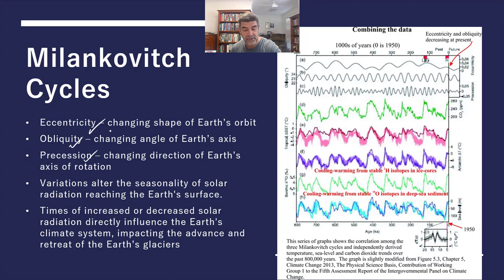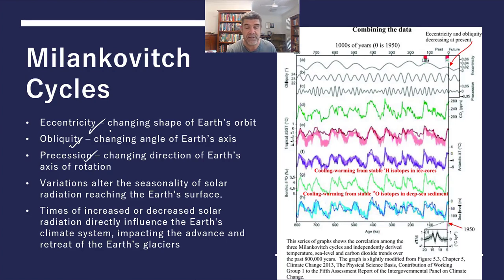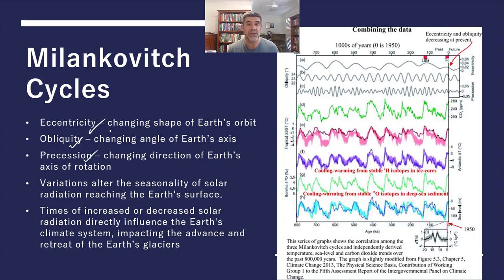Taken together, variations in the three cycles create alterations in the seasonality of solar radiation that reaches the Earth's surface. As a result, we can have times of increased or decreased solar radiation, and therefore natural changes in climate systems. We've also seen glacial and interglacial periods that correspond to these Milankovič cycles. It's important to understand natural climate change so that if rates change or anything doesn't fit the pattern of previous cycles, we can understand why people might be concerned about it.